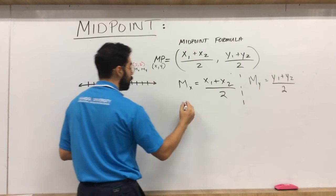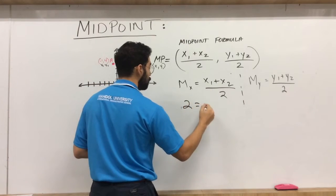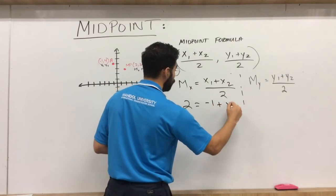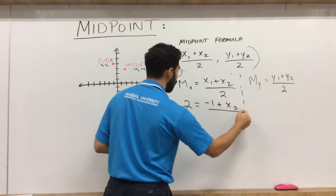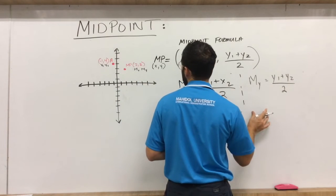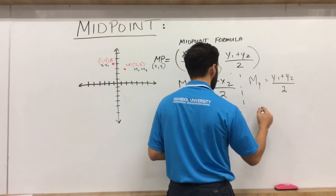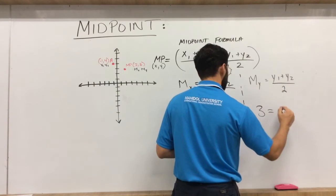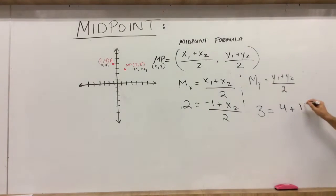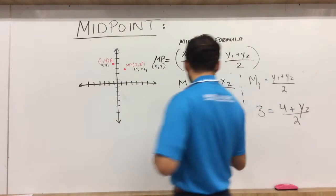So let's go ahead and plug those in. So our midpoint for our x value would end up being 2, x1 would be negative 1. We do not know this value or other endpoint. Let's go ahead and do the same thing here. Y value for our midpoint would be 3, y1 is 4. We do not know the other endpoint.